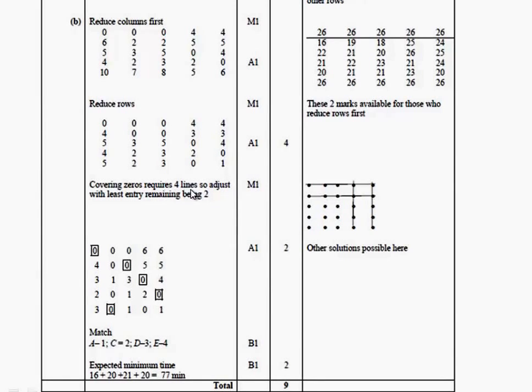Discovering that you cover the zeros with four lines and having the least entry remaining being two. And those were the lines we used. There are other solutions possible here, as long as you've succeeded in covering with four lines. And then, once we've augmented, we've subtracted twos from the uncovered elements, left the elements covered by just a single line the same, and added two to the four elements that were covered by two lines.